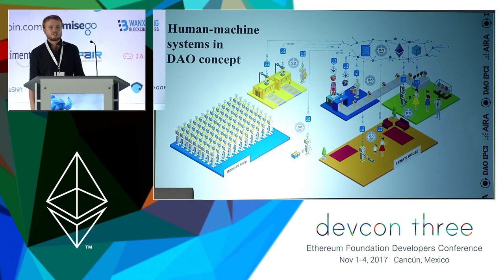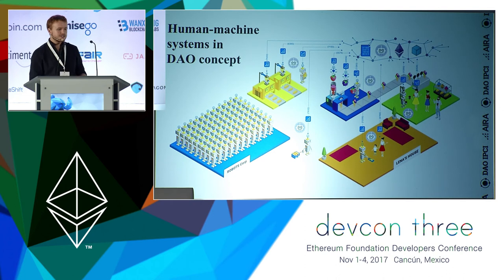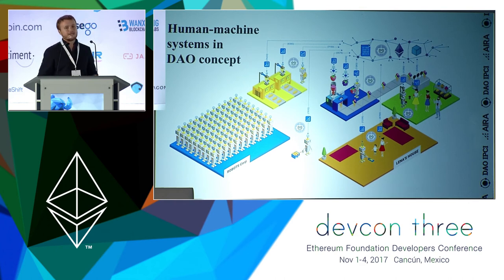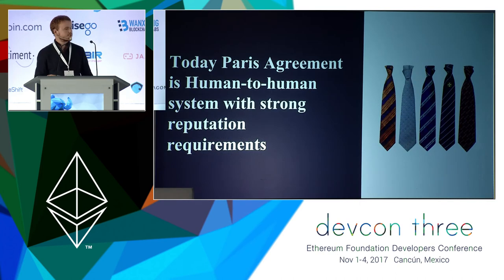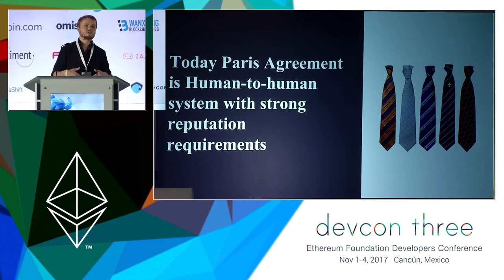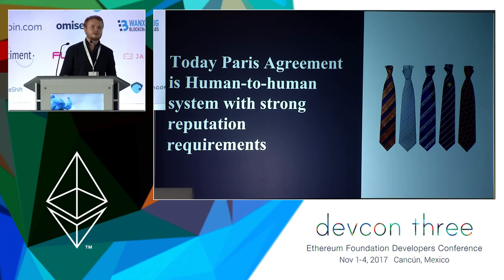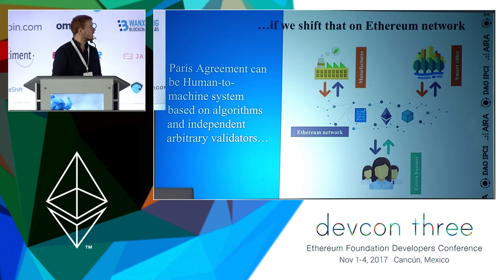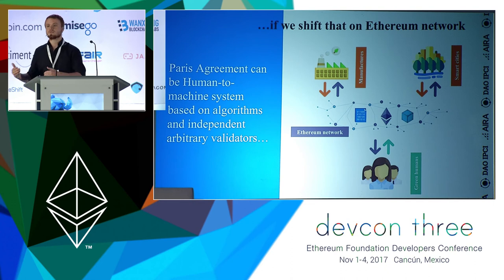My main work is researching the capability of human-to-machine systems. For the last three years, we've been working on the concept of a robot economy — building the first planetary supply chain with direct economic communication between humans and machines. But the Paris Agreement today is a human-to-human system with strong reputation requirements. This requirement is problematic because we cannot conduct planetary experiments under such constraints. If we shift the Paris Climate Agreement onto a blockchain network, it can become a human-to-machine system.